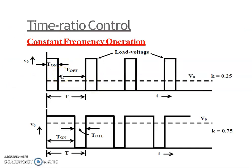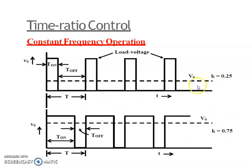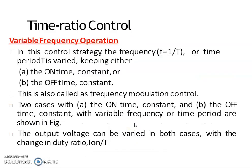In this figure, the chopping period capital T and chopping frequency f = 1/T are kept constant. In the first case we are keeping duty ratio alpha equal to 0.05, and in the second case duty ratio alpha is equal to 0.75. Thus we can obtain different levels of average output voltage by varying the duty ratio. That is constant frequency control.